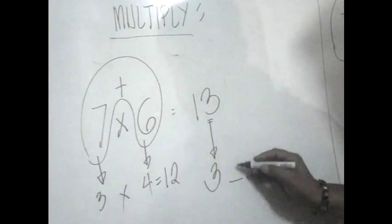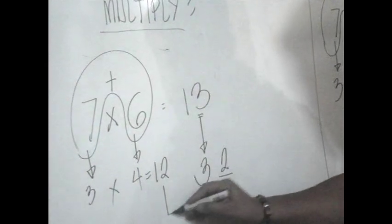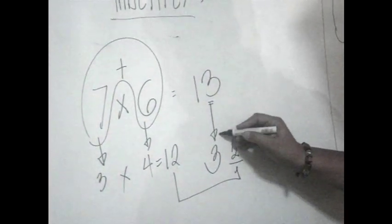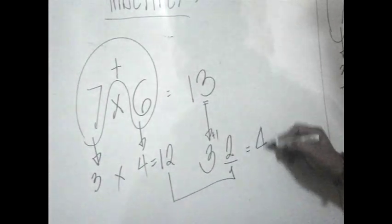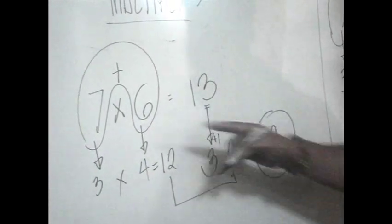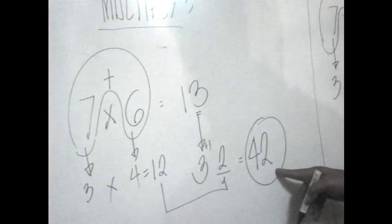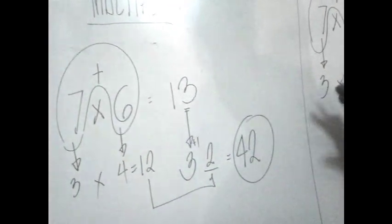So, therefore, you put 2 here. And the 1 is to be carried here to be plus with 3. And the answer, therefore, is 42. So, 7 times 6 is 42. So, we just follow the same procedure.